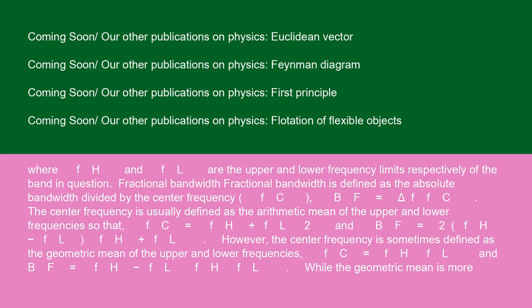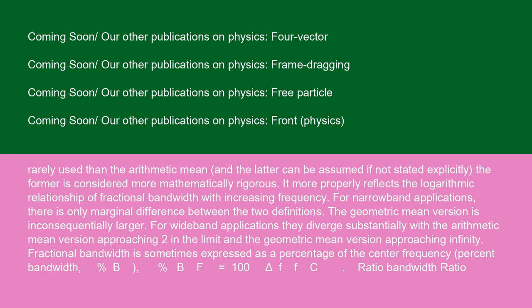However, the center frequency is sometimes defined as the geometric mean of the upper and lower frequencies. FC equals square root of FH times FL and BF equals FH minus FL over square root of FH times FL. While the geometric mean is more rarely used than the arithmetic mean, and the latter can be assumed if not stated explicitly, the former is considered more mathematically rigorous. It more properly reflects the logarithmic relationship of fractional bandwidth with increasing frequency. For narrowband applications, there is only marginal difference between the two definitions. The geometric mean version is inconsequentially larger.